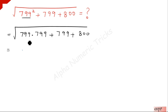So 799 is common. You can take it outside: 799(799 + 1) plus 800.